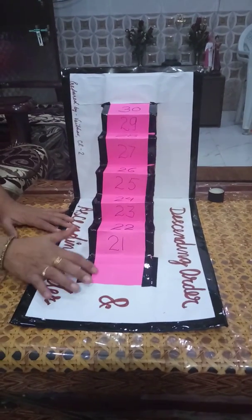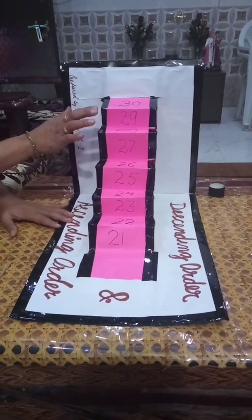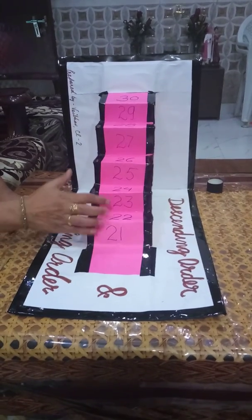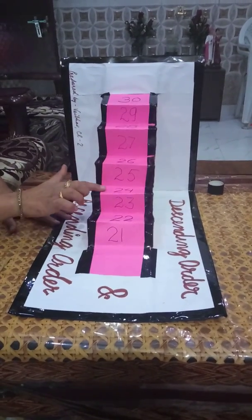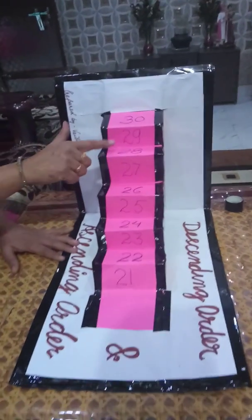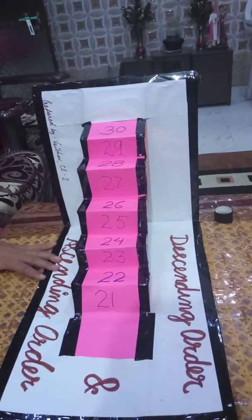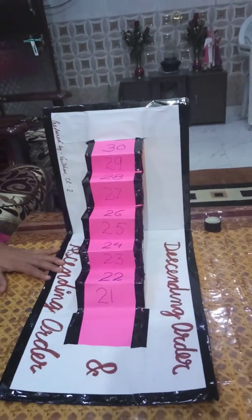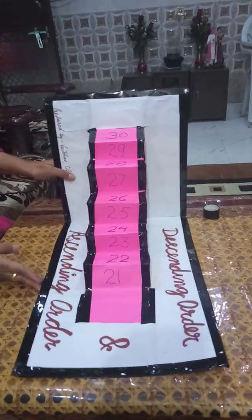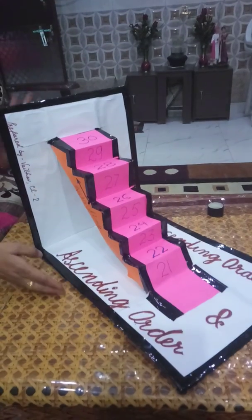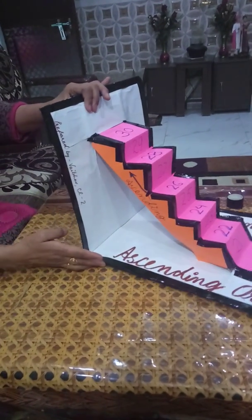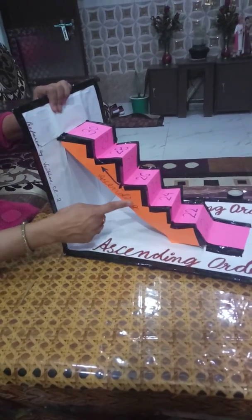I have made stairs in this model. The numbers 21, 22, 23, 24, 25, 26, 27, 28, 29, 30 are written on the stairs, so we can tell students and clear their concept.